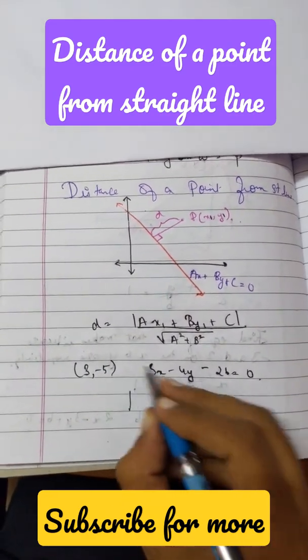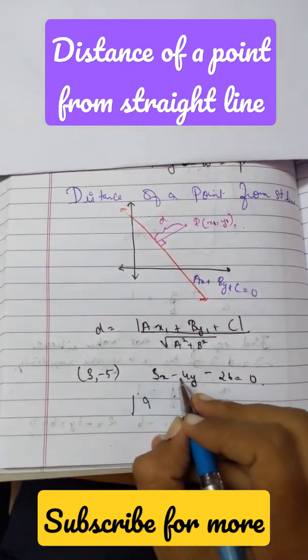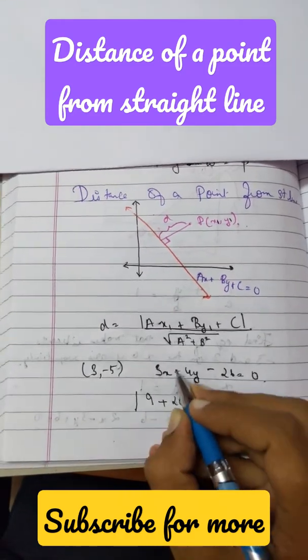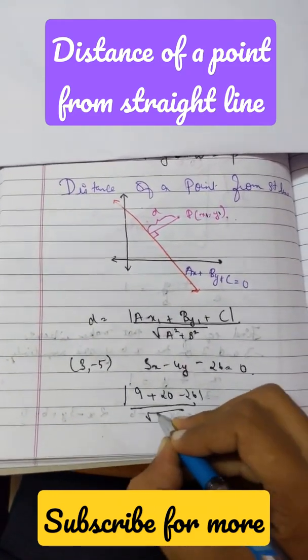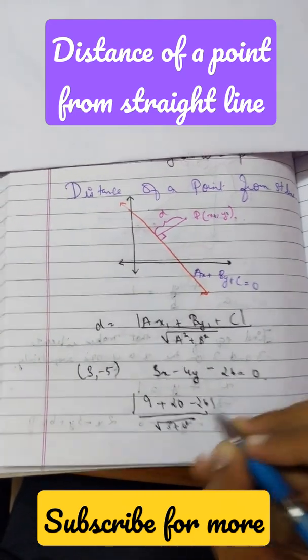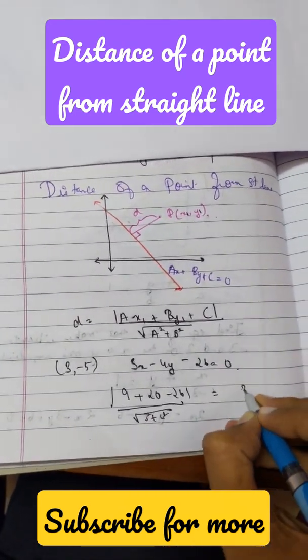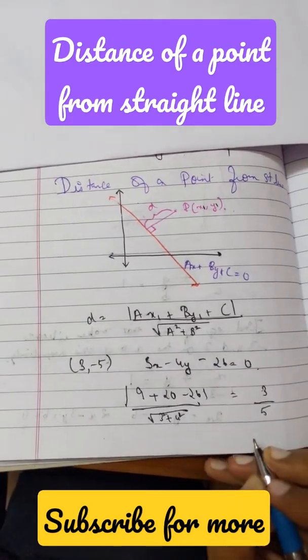Substituting this we will get 3 into 3 is 9, 5 into 4 is 20, and we have minus 26 divided by root over 3 square plus 4 square. So 29 minus 26 will be 3 by 5.